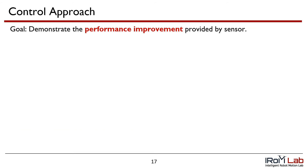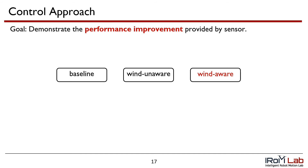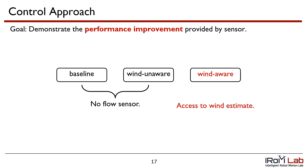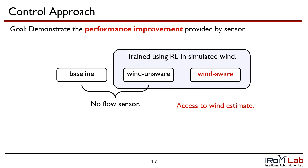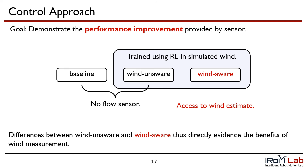Our goal in control is to demonstrate the performance improvement provided by the sensor. To do so, we compare the performance of wind-aware control with two baselines, known as baseline and wind-unaware. While wind-aware has access to the wind estimate, wind-unaware and baseline have no flow sensor. Wind-unaware and wind-aware are then trained using reinforcement learning in simulated wind. The differences between wind-unaware and wind-aware thus directly evidence the benefits of wind measurement.